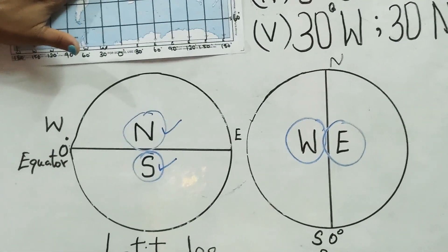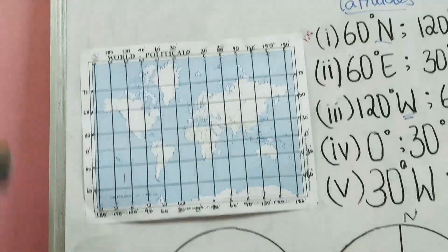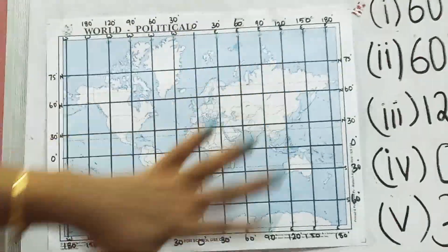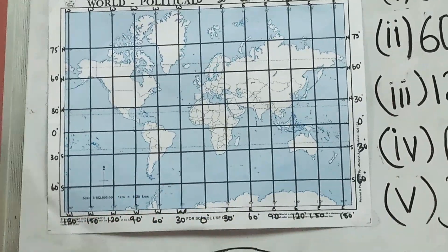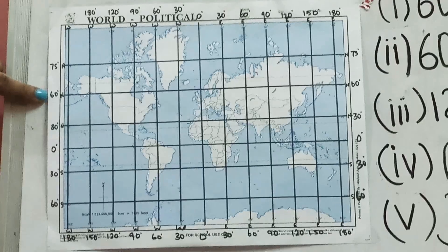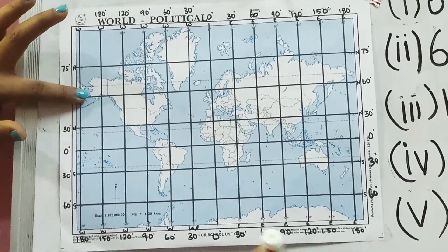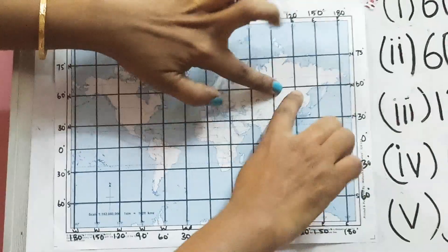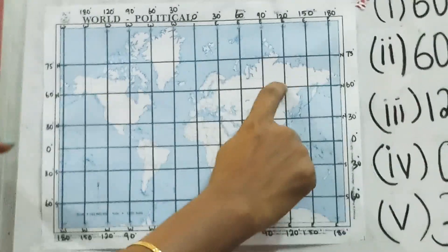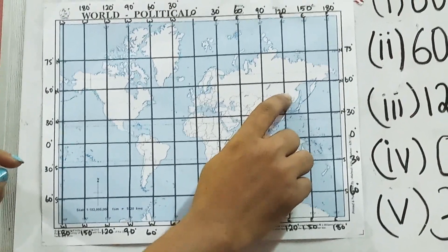Let's see the first coordinate: 60 degree north and 120 degree east. On the map, I have marked the degrees and directions. Find 60 degree north and keep your finger on it, then move along that line. 120 degree east lies here. The meeting place of 60 degree north and 120 degree east is your destination — it belongs to the Asia continent.